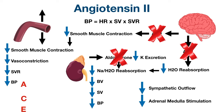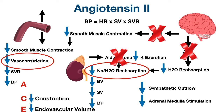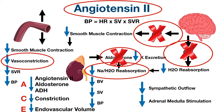Here's a simple mnemonic using the acronym ACE to remember the main effects of ACE inhibitors. ACE inhibitors have two main effects: they decrease vasoconstriction — remember with the C — and they decrease sodium and water reabsorption, reducing endovascular or intravascular volume — remember with the E. ACE inhibitors accomplish these effects by decreasing levels of angiotensin 2, aldosterone, and antidiuretic hormone — all remembered with the letter A.